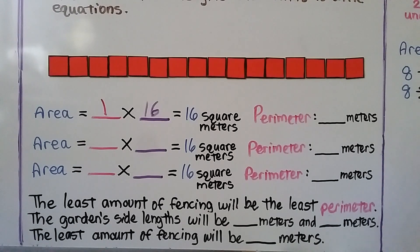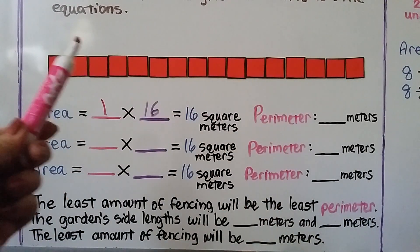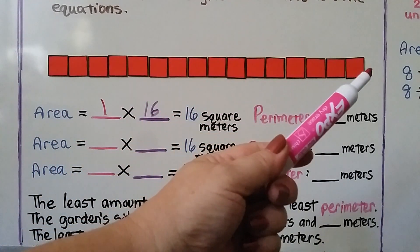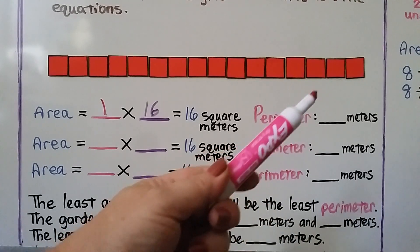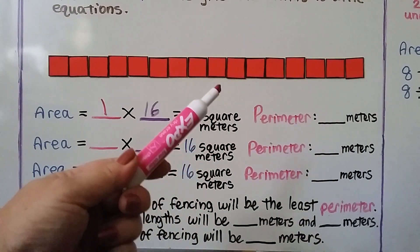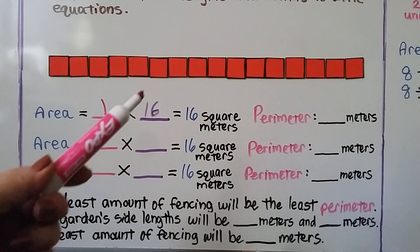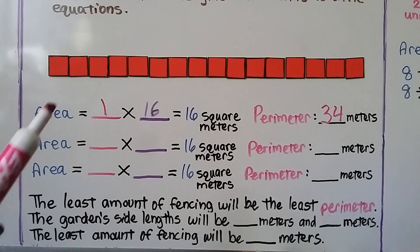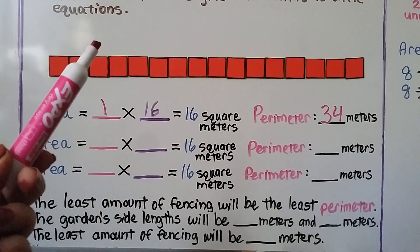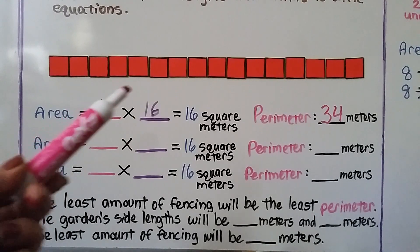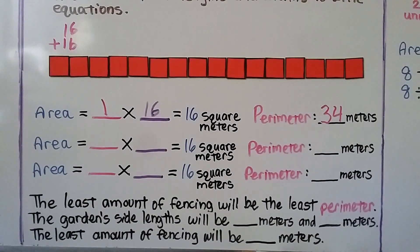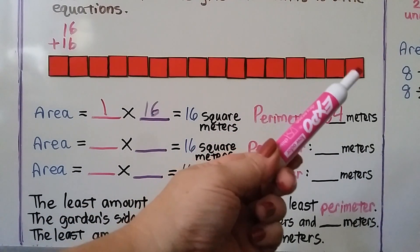What's the perimeter? There are 16 units across the top, 16 across the bottom, and 1 on each side. We can do 16 plus 16 to get 32, then add the two sides to get 34. So our perimeter is 34 meters.